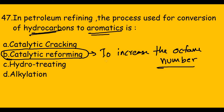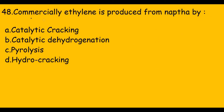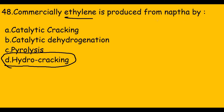The next question asks: commercially, ethylene is produced from naphtha by — the answer is hydrocracking. Ethylene is produced from naphtha by hydrocracking.